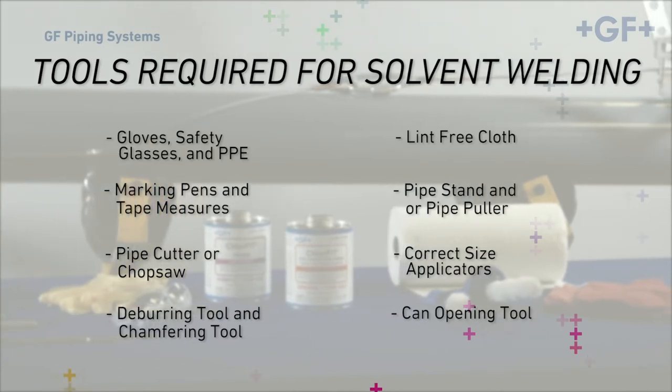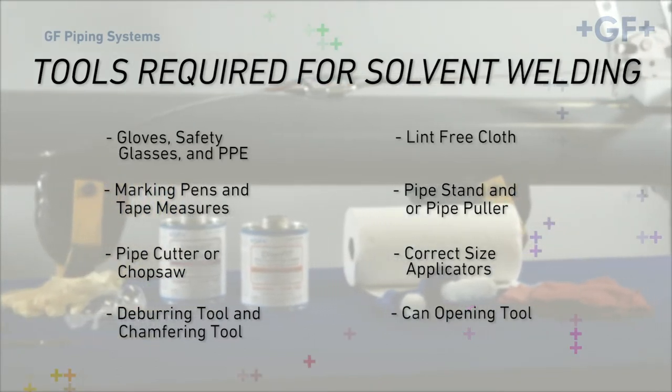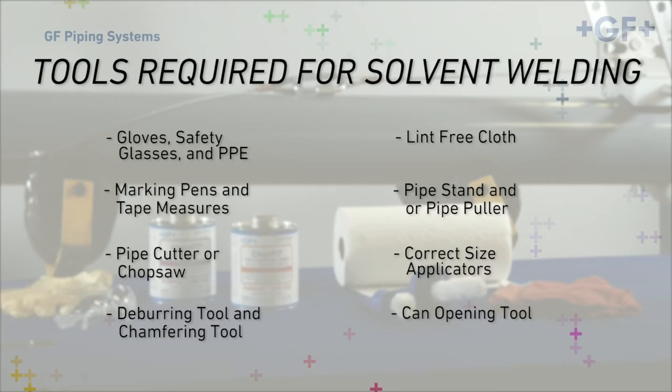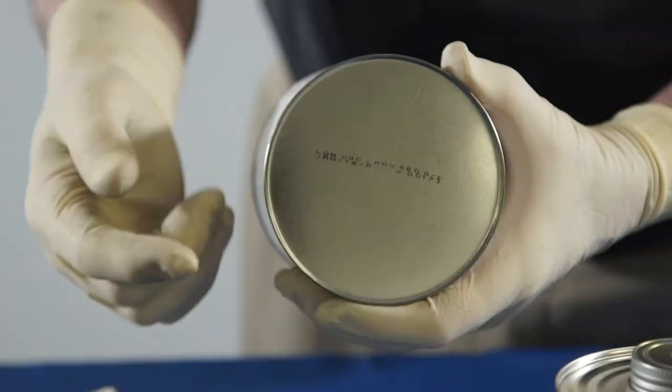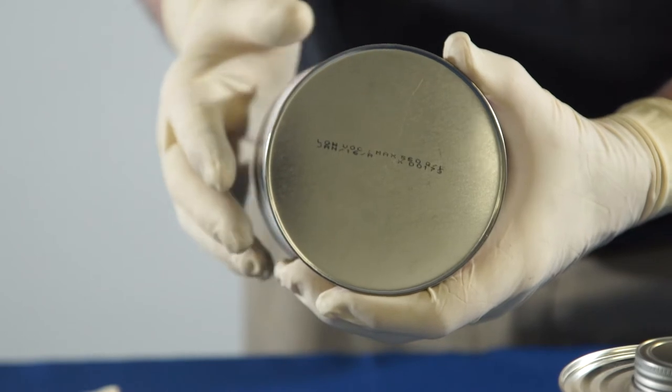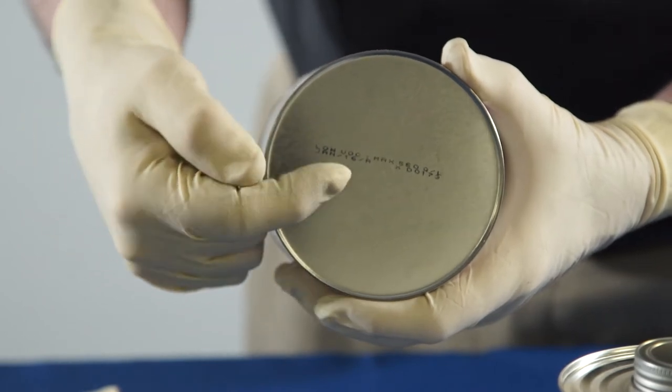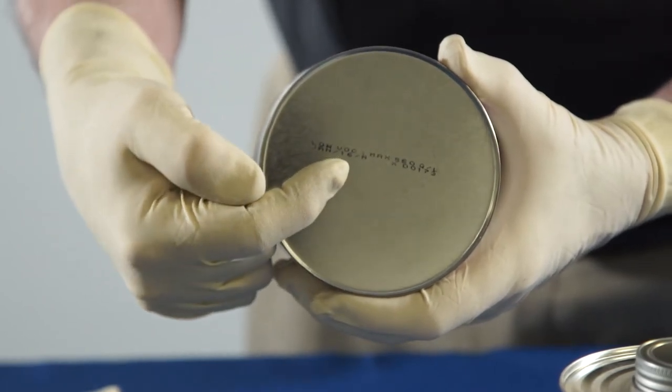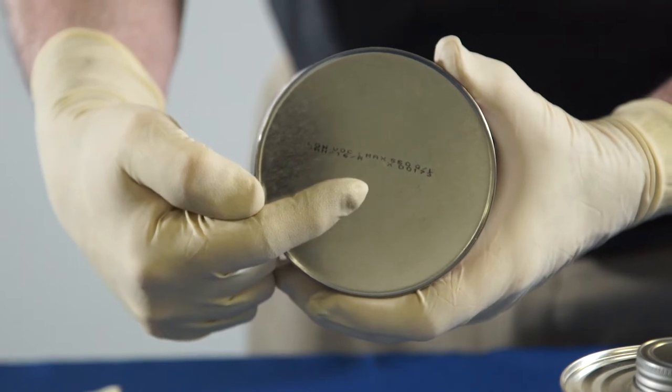The can opener is designed to prevent damage when loosening and tightening the lids on the primer and solvent cement cans. For ChlorFit solvent cement, the date on the bottom of the container is the date of manufacturer, not the expiration date. When stored properly, the shelf life of the material is two years.